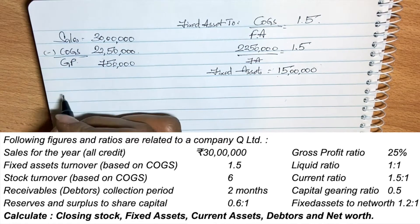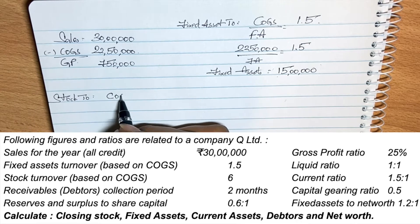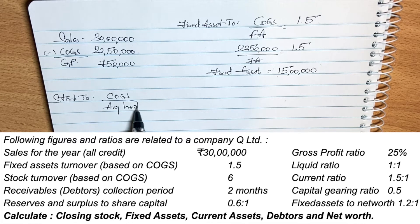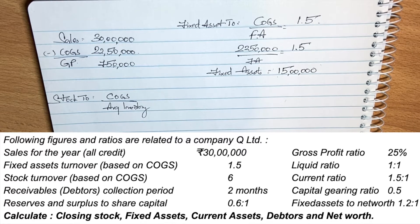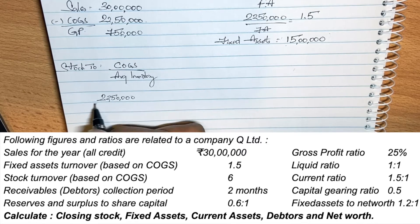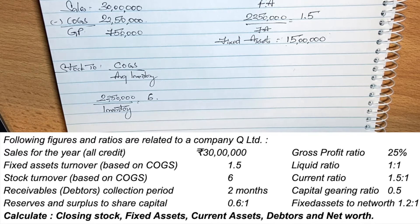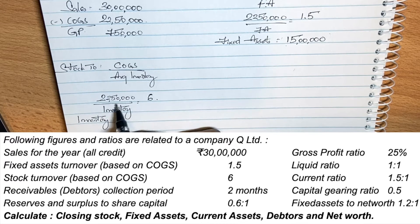Next is stock turnover based on cost of goods sold. The formula is: cost of goods sold divided by average inventory equals the stock turnover ratio. Cost of goods sold is 22,50,000 divided by inventory equals 6. Therefore inventory equals 22,50,000 divided by 6, which gives us 3,75,000.